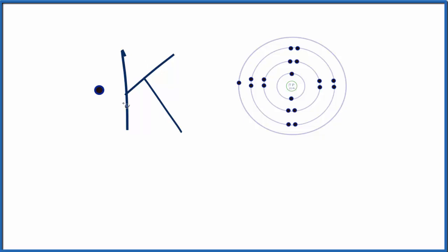So on the periodic table, K, potassium, it's neutral. It doesn't have a plus or minus charge, so it's not an ion. In fact, the number of protons and the number of electrons, they're the same.